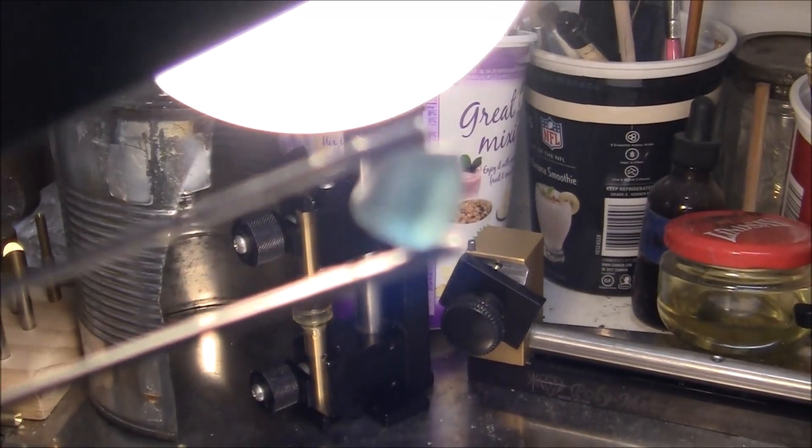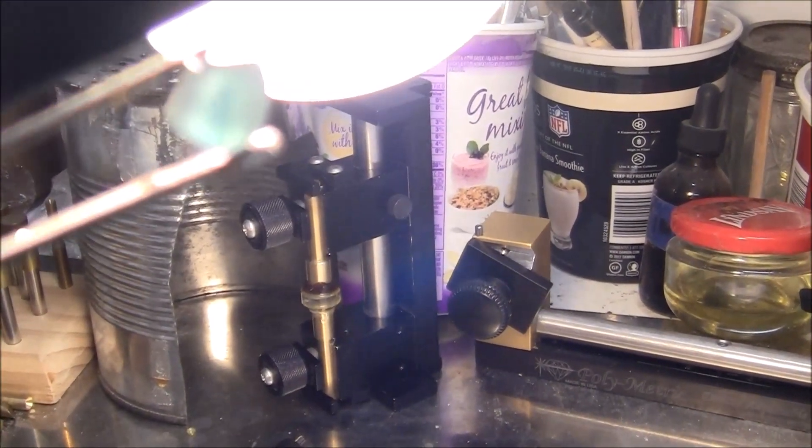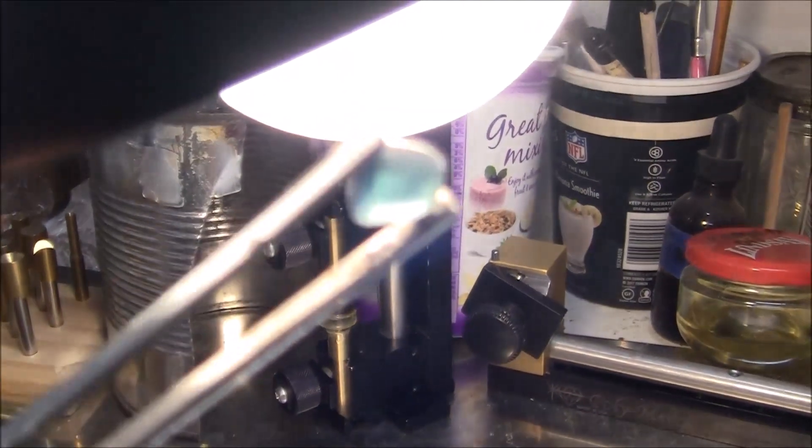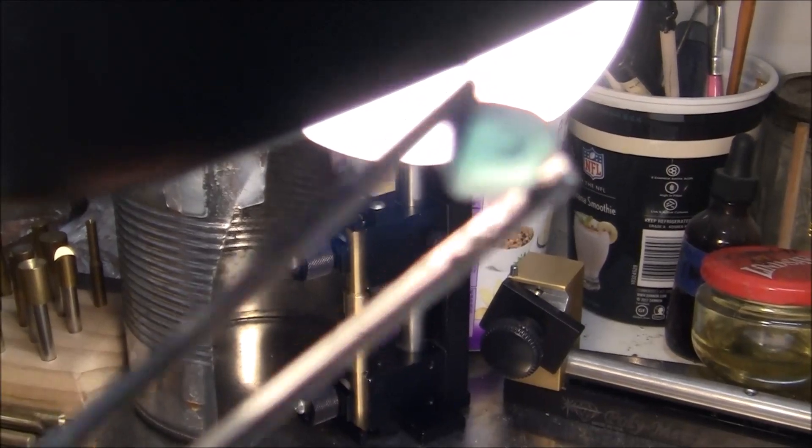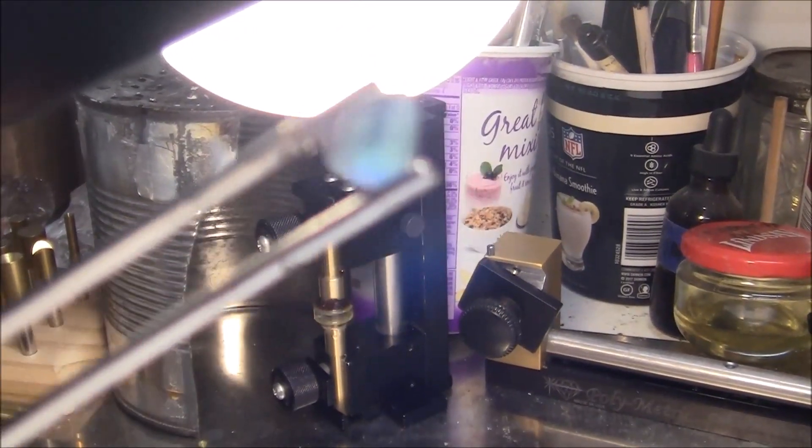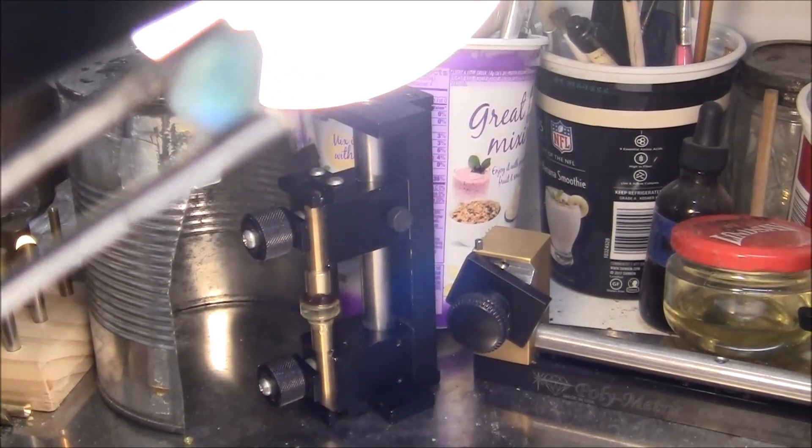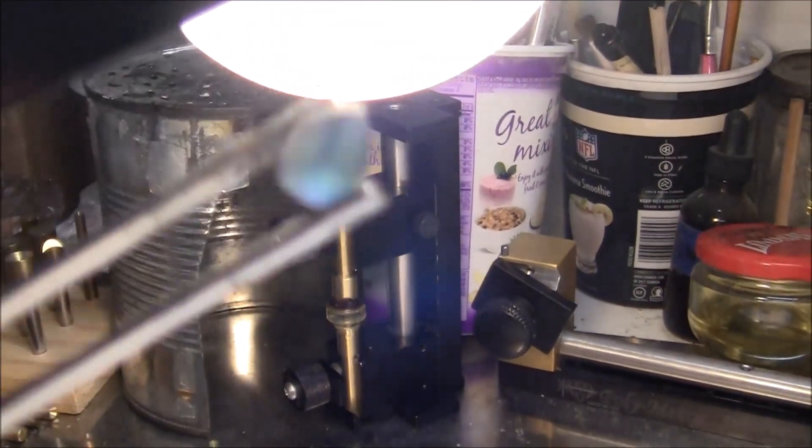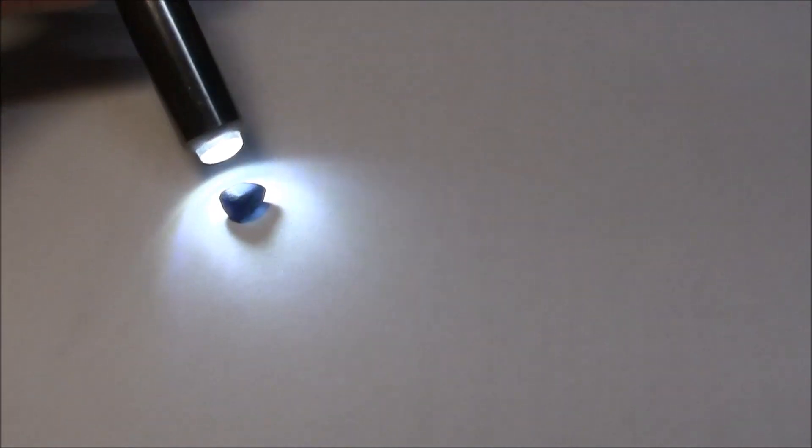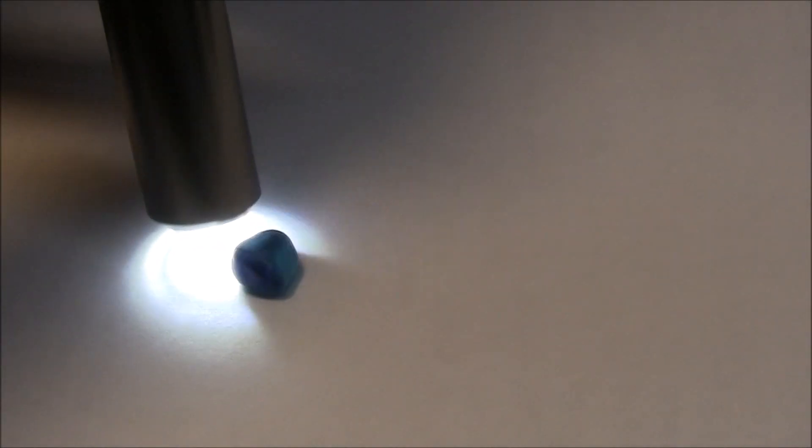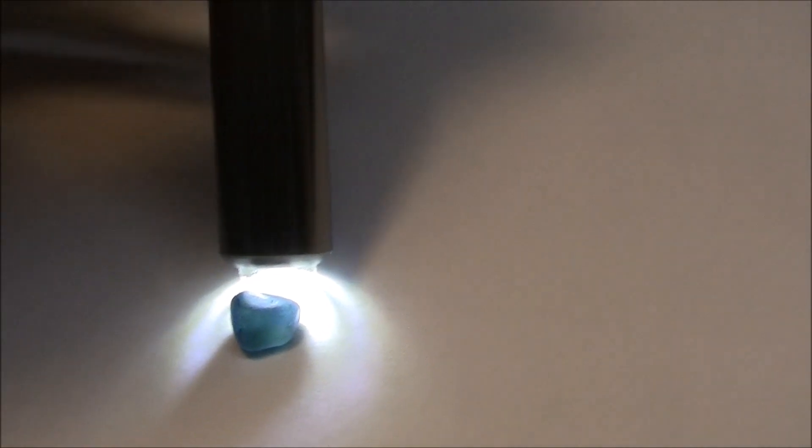It's still got some blue green, it's got green in it so it's a blue green sapphire I'll call it. This is an Australian sapphire. And I'll make a round brilliant out of it. Hopefully it will turn out pretty good.